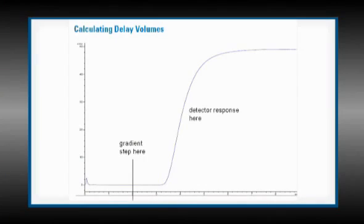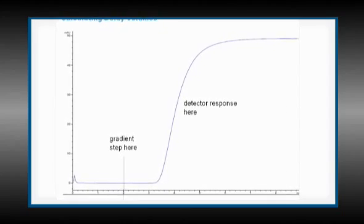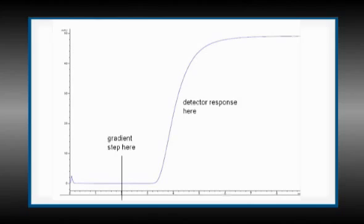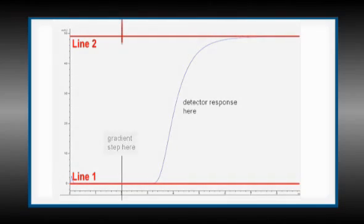First, prepare a full-page landscape printout of the step gradient trace or, alternately, copy and paste the image to PowerPoint, as we have done here. Using a ruler on paper, or by inserting lines in PowerPoint, draw lines parallel to the X or Y axis at the following points: at the zero signal defined by the region of 0% B, at the maximum stable signal defined by the region of 100% B, and a vertical line at 2 minutes.